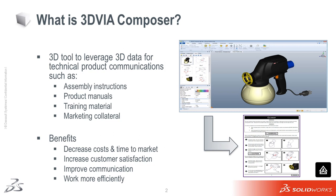With 3D Via Composer technology, companies across a broad range of industries can leverage existing 3D CAD data to streamline the development of technical communications and create more compelling documentation with higher impact. You can start your documentation sooner, update it faster, and complete it simultaneously with a product design, giving you lower costs and decreased time to market.